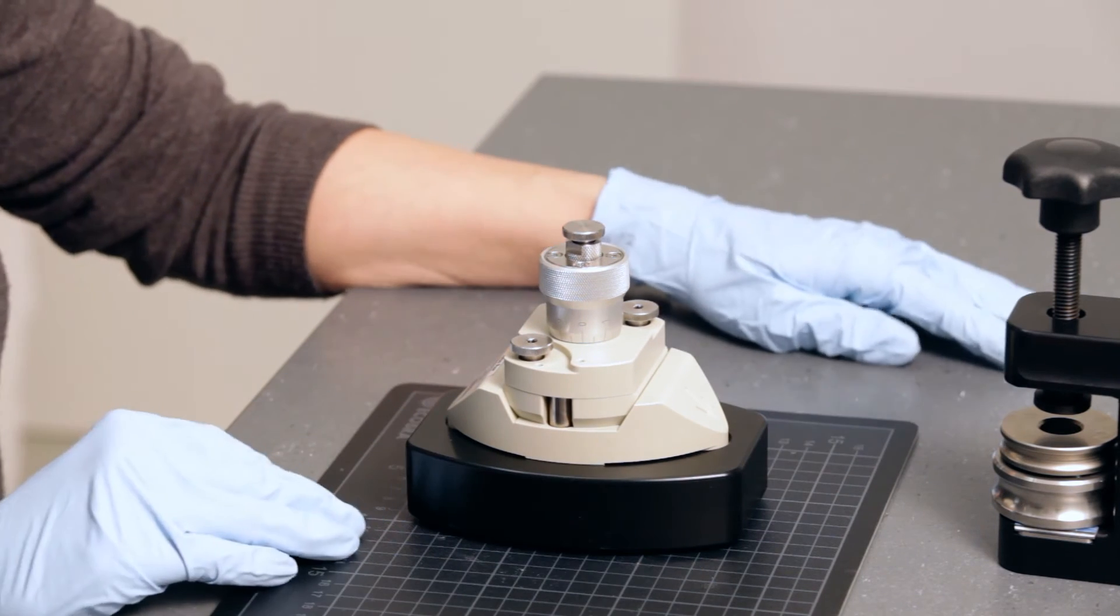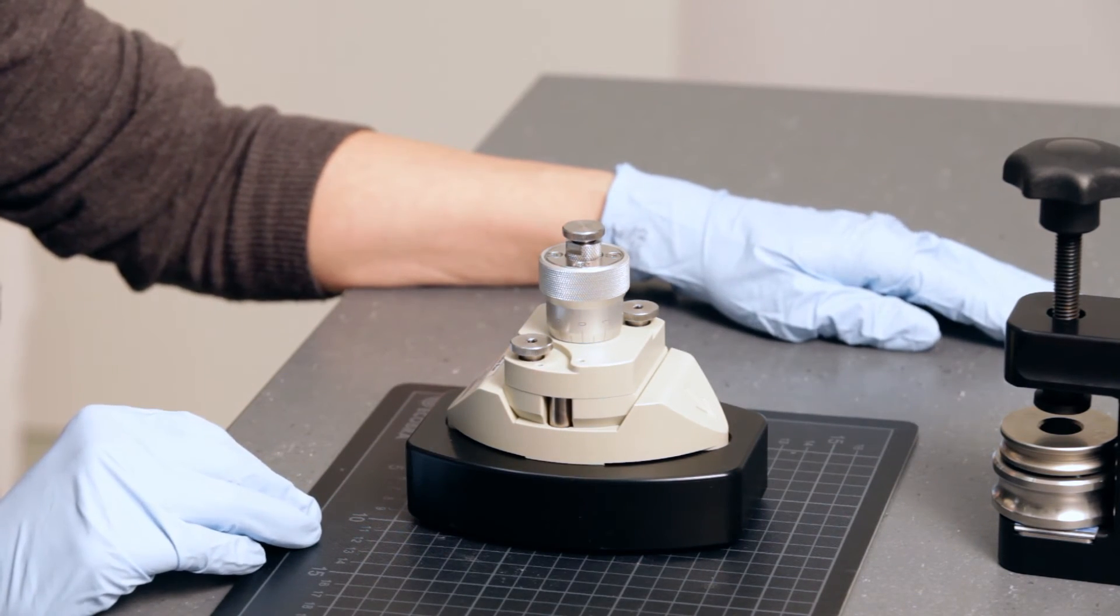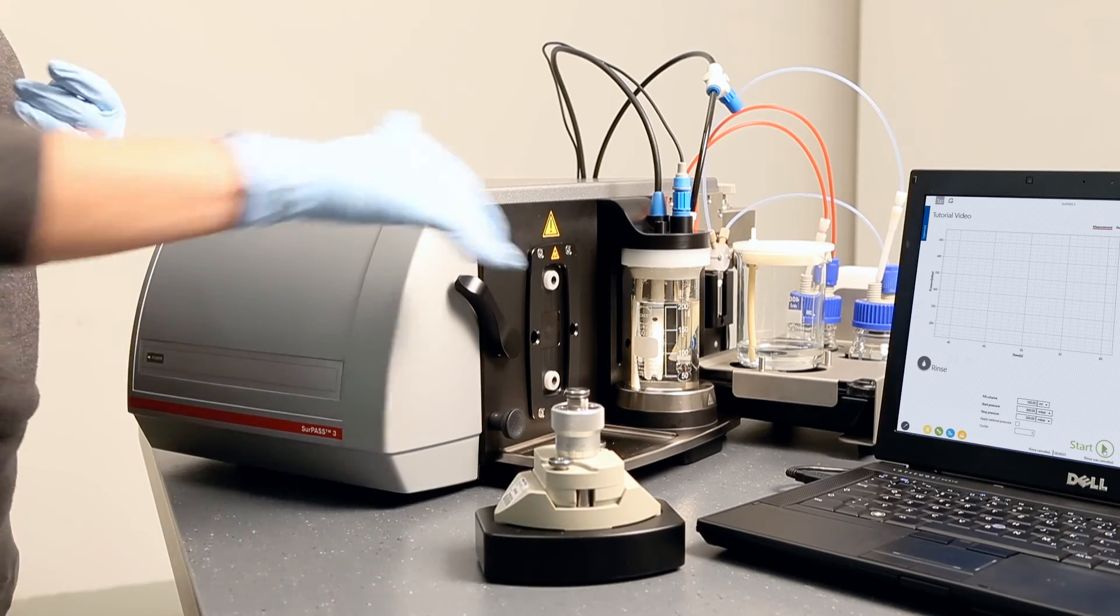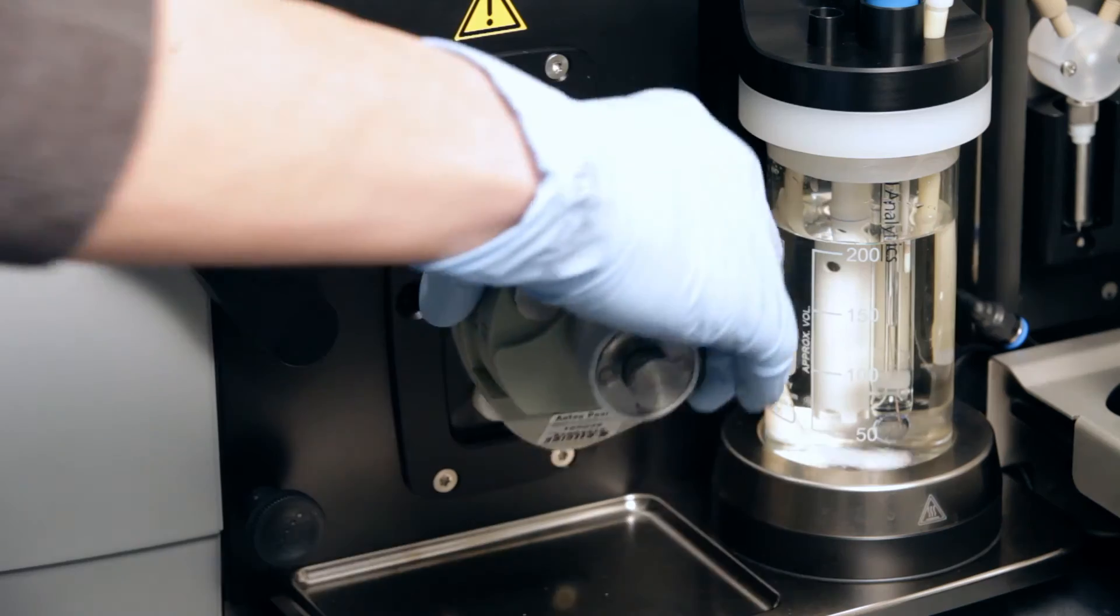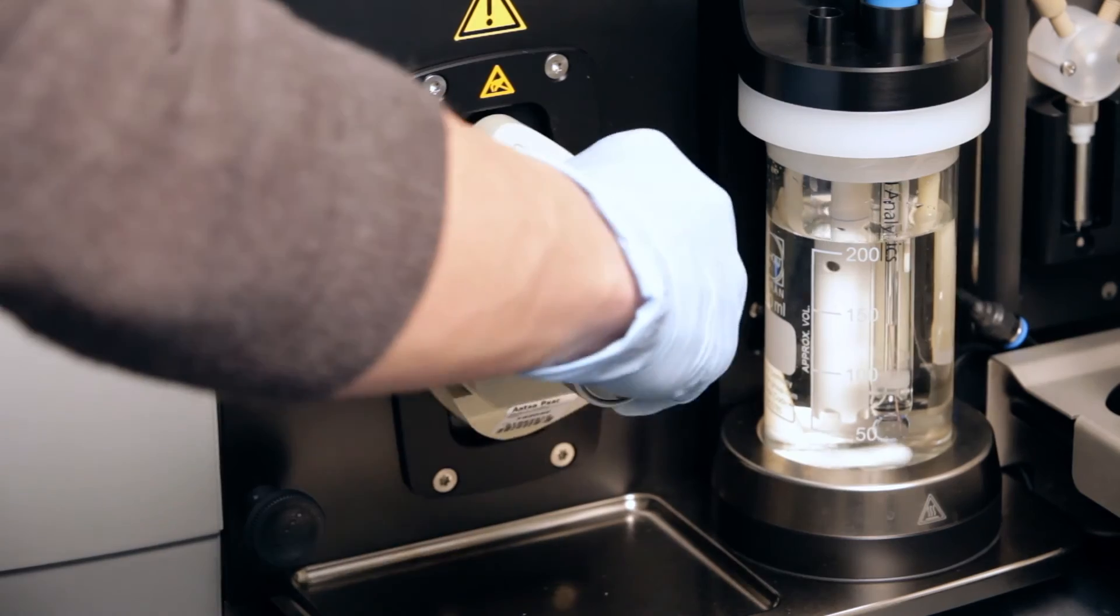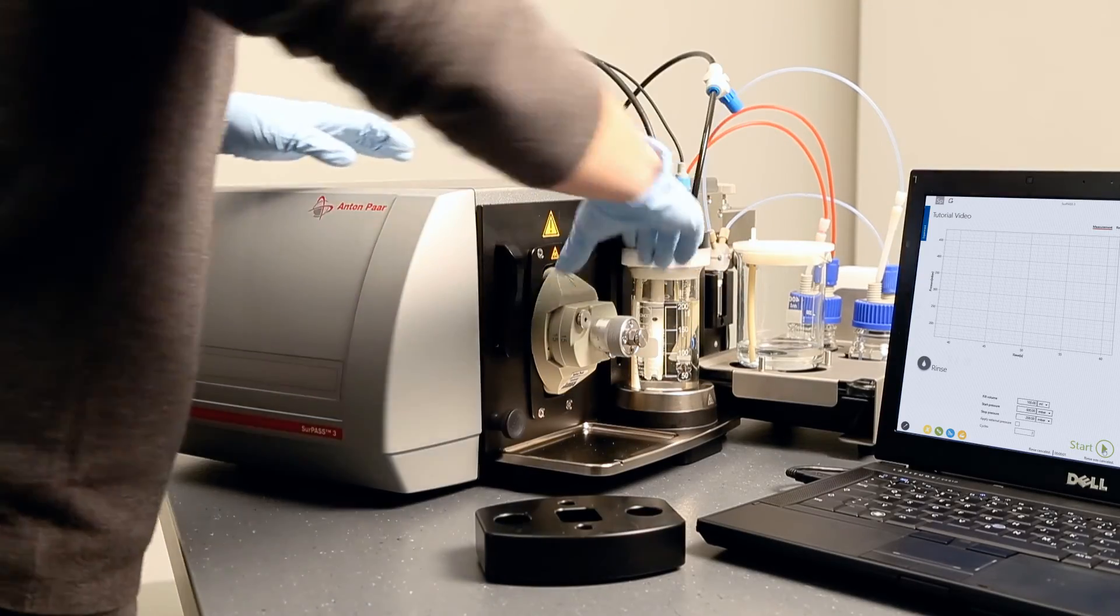Now you can mount the measuring cell on the instrument. Simply plug in the cell and lock it by turning the lever to an upright position.